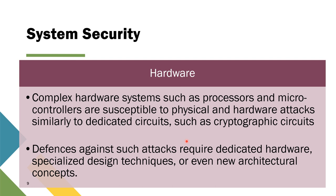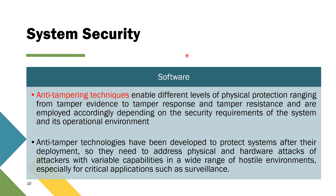For an IoT system, if you place sensors inside a field or factory, you want to protect them from damage or vandalism, so you need dedicated hardware protection — for example, a cover or casing. You also need to protect the software used in your IoT system. Anti-tampering techniques enable different levels of physical protection, from tamper evidence to tamper response and tamper resistance, applied depending on the security requirement and operational environment.